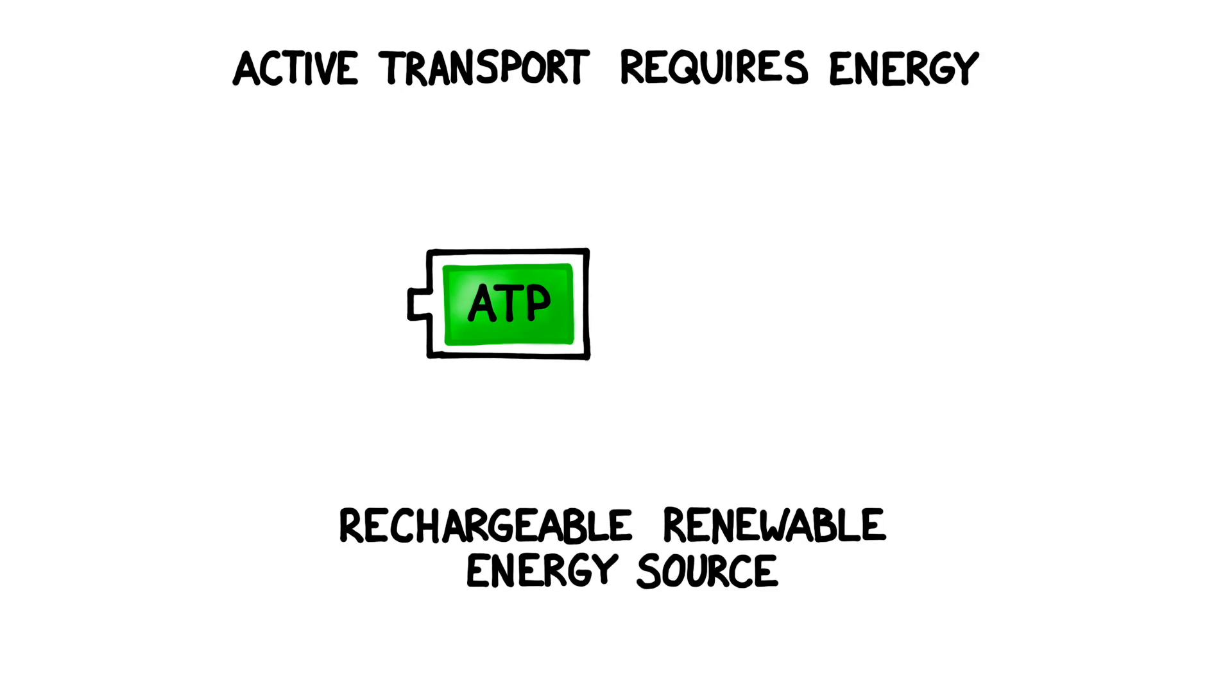Active transport requires the input of energy, usually in the form of ATP. Remember that ATP, or adenosine triphosphate, is a rechargeable, renewable source of cellular energy, almost like a battery. It stores energy in its bonds, and that energy is released when the bonds are broken. The ATP is reduced to lower energy ADP, then is recharged into ATP via cellular respiration.